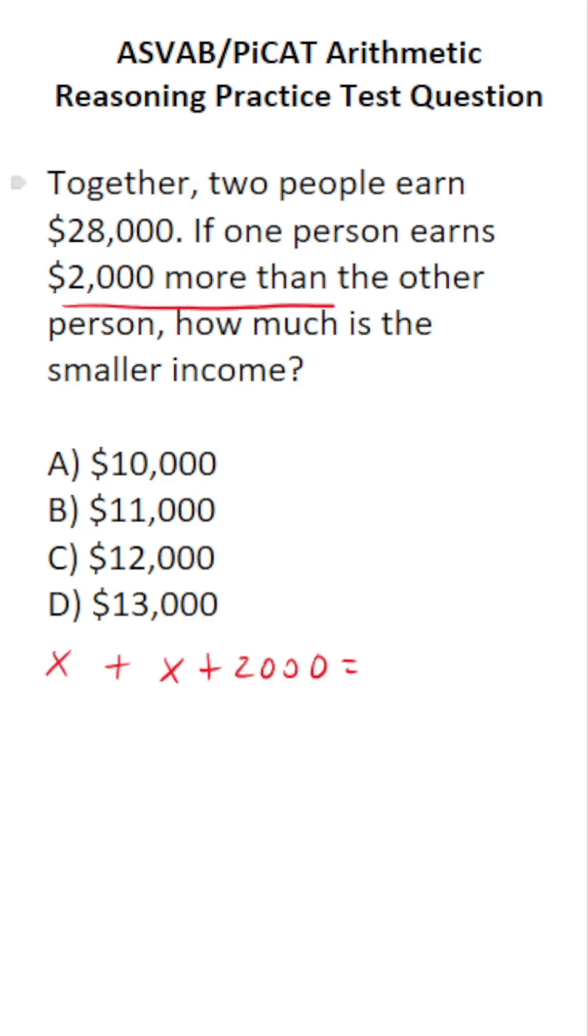Because according to the problem, they make $2,000 more than the other person. Their total income or their combined income is $28,000.